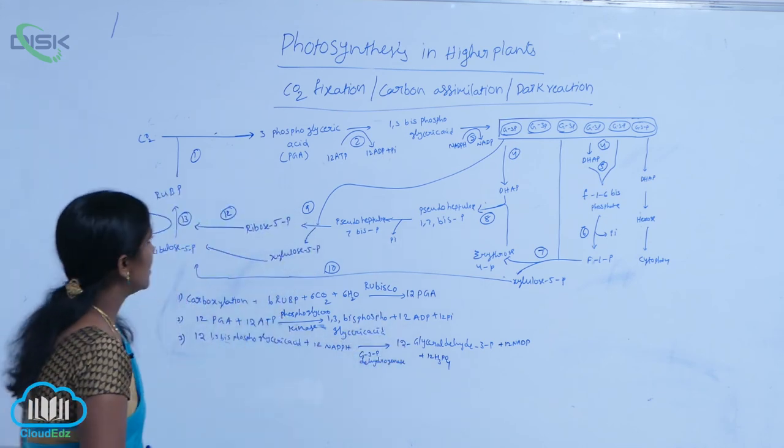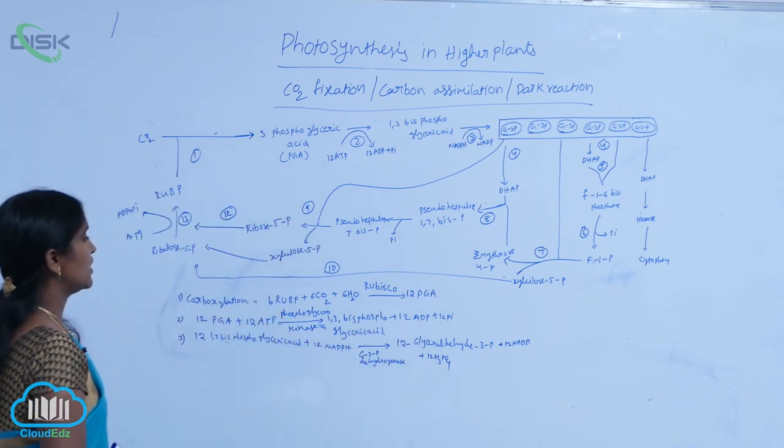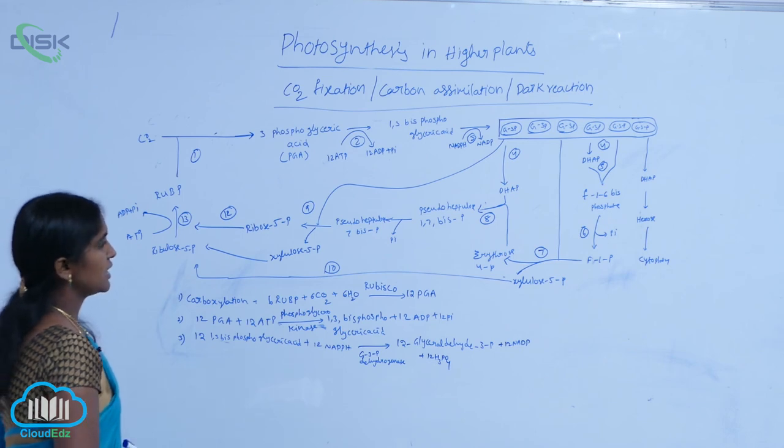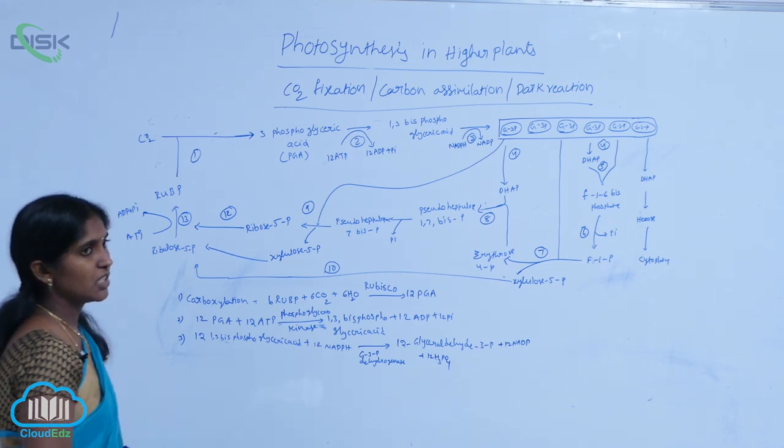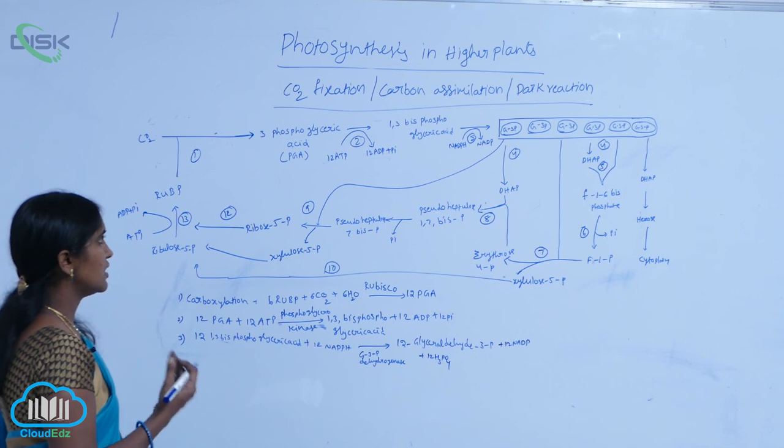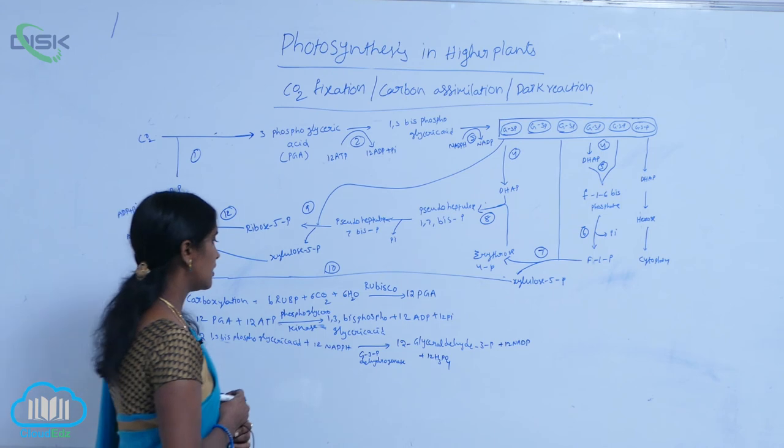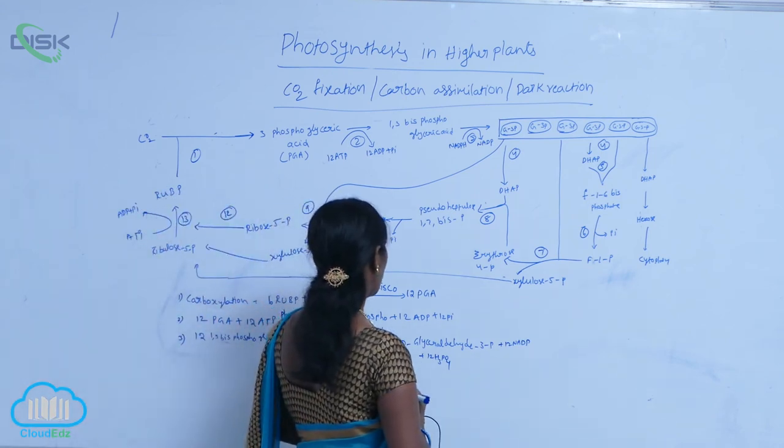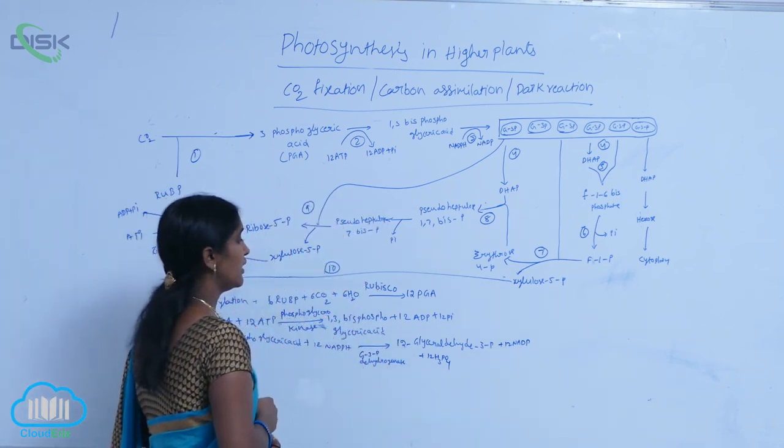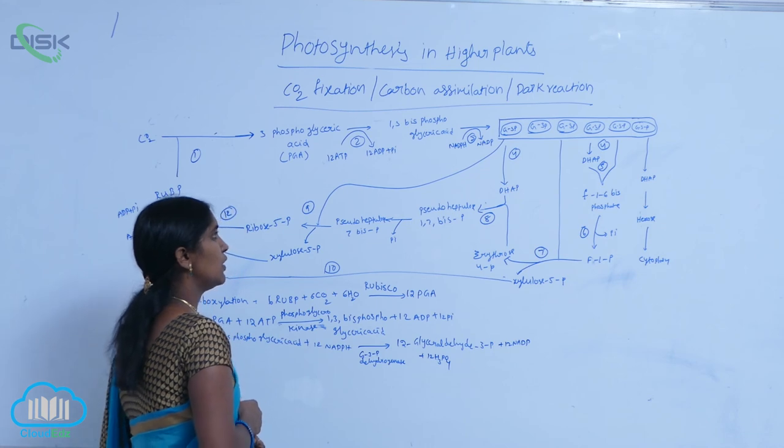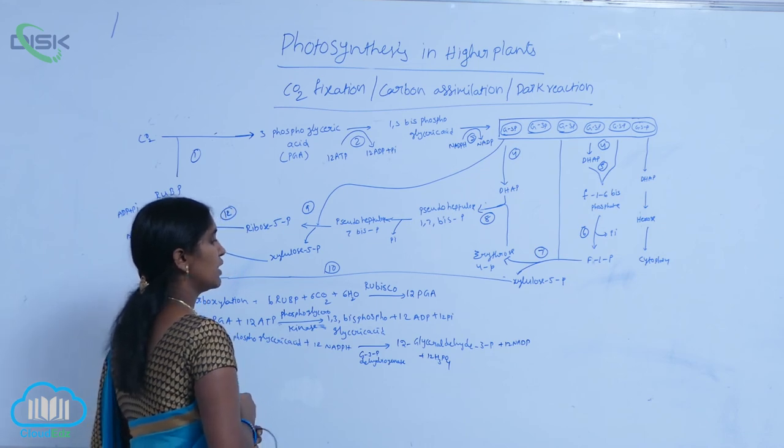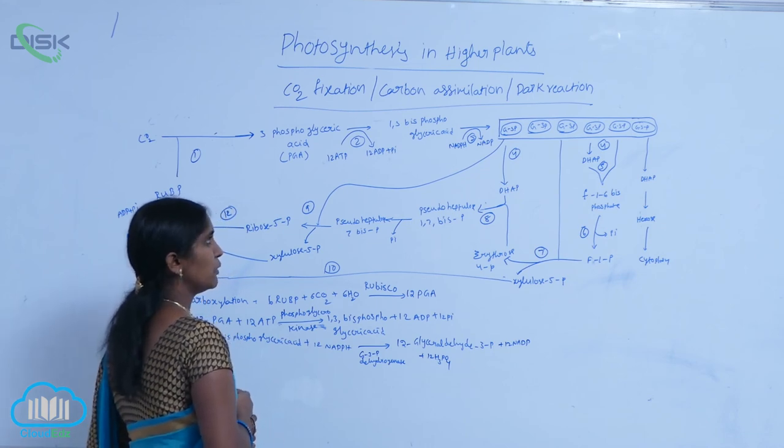You see here, the first reaction is carboxylation reaction. And next reaction is energy utilization reactions. In the second reaction, the ATP is utilized. In the third reaction, the NADPH is utilized here and that resulted in 12 molecules of glyceraldehyde 3-phosphate production.